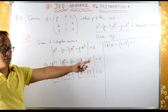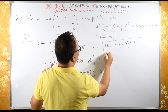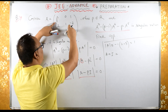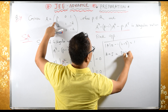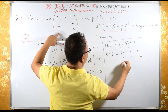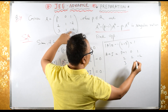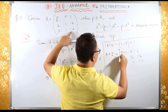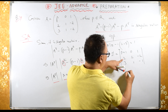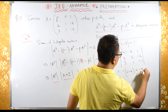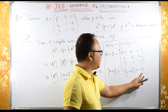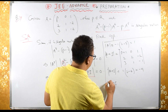Now what is A plus I? We add the identity matrix, so all diagonal elements increase by 1. We get entries: beta plus 1, 0, 1; then 2, 2, minus 2; then 3, 1, minus 1. Computing this determinant: 2 plus 2 minus 2 times 3 gives minus 4. So determinant of (A plus I) equals minus 4.